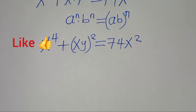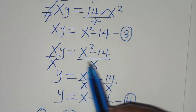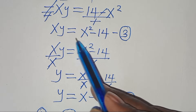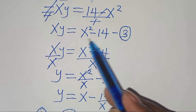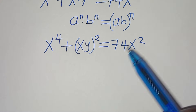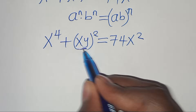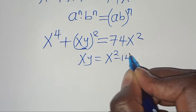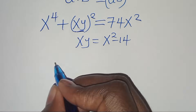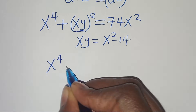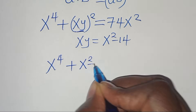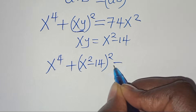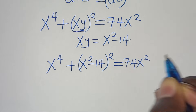From equation 3, xy equals x squared minus 14. Let's substitute xy with x squared minus 14. So we have x to the power of 4 plus (x squared minus 14) squared equals 74x squared.